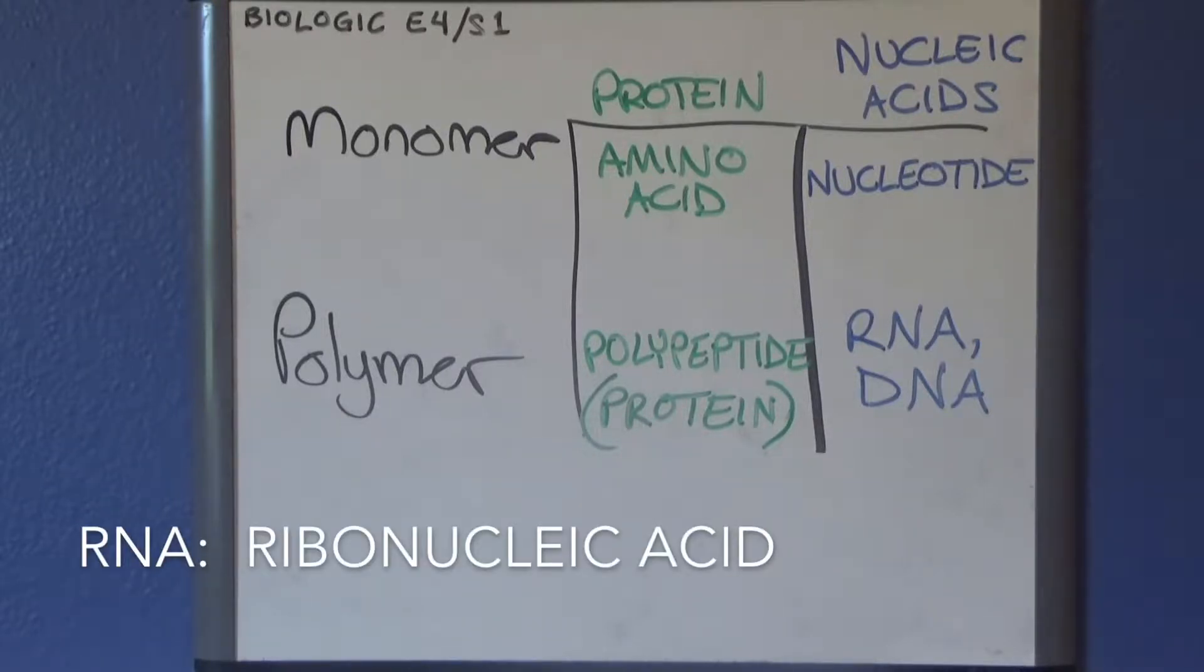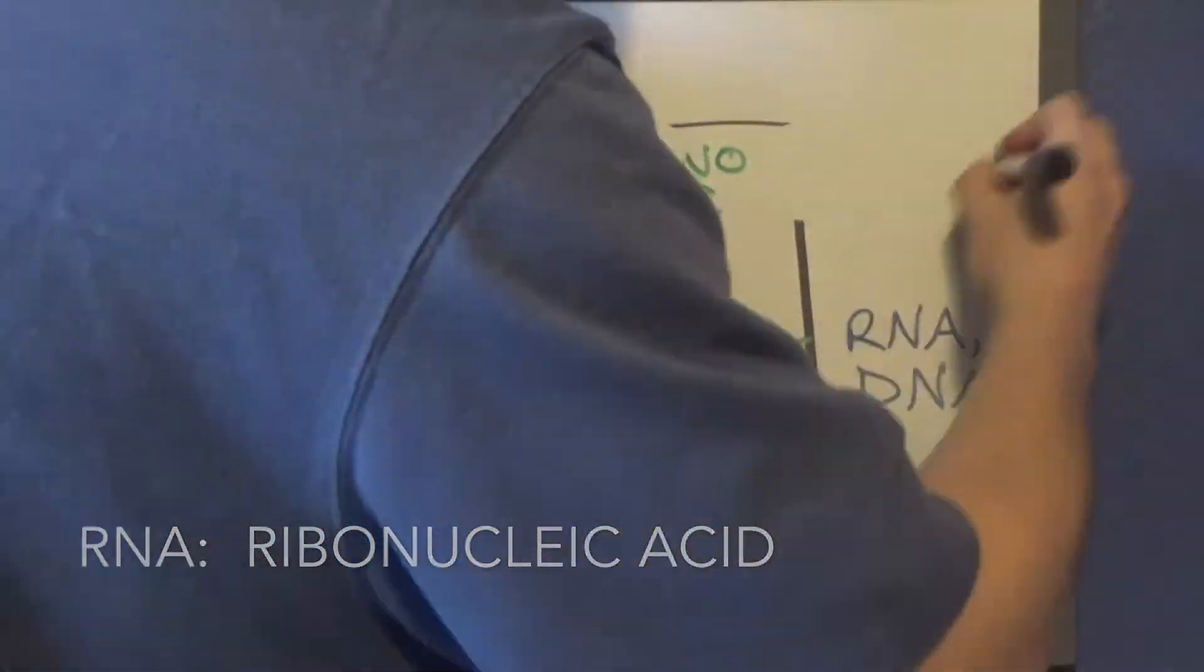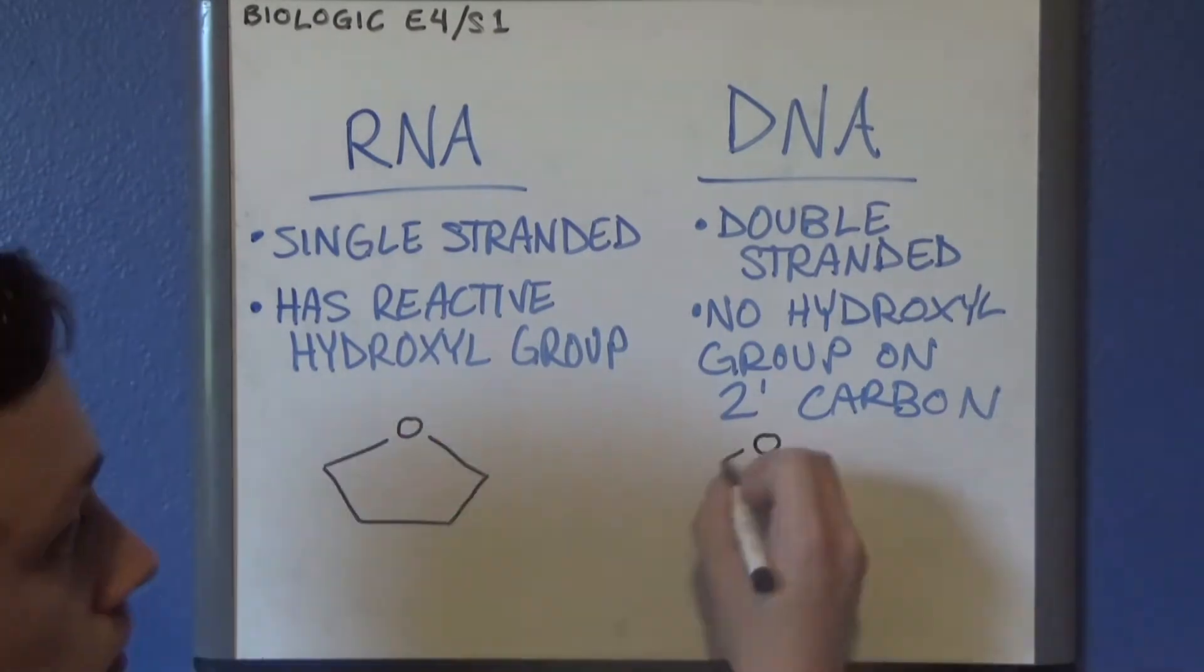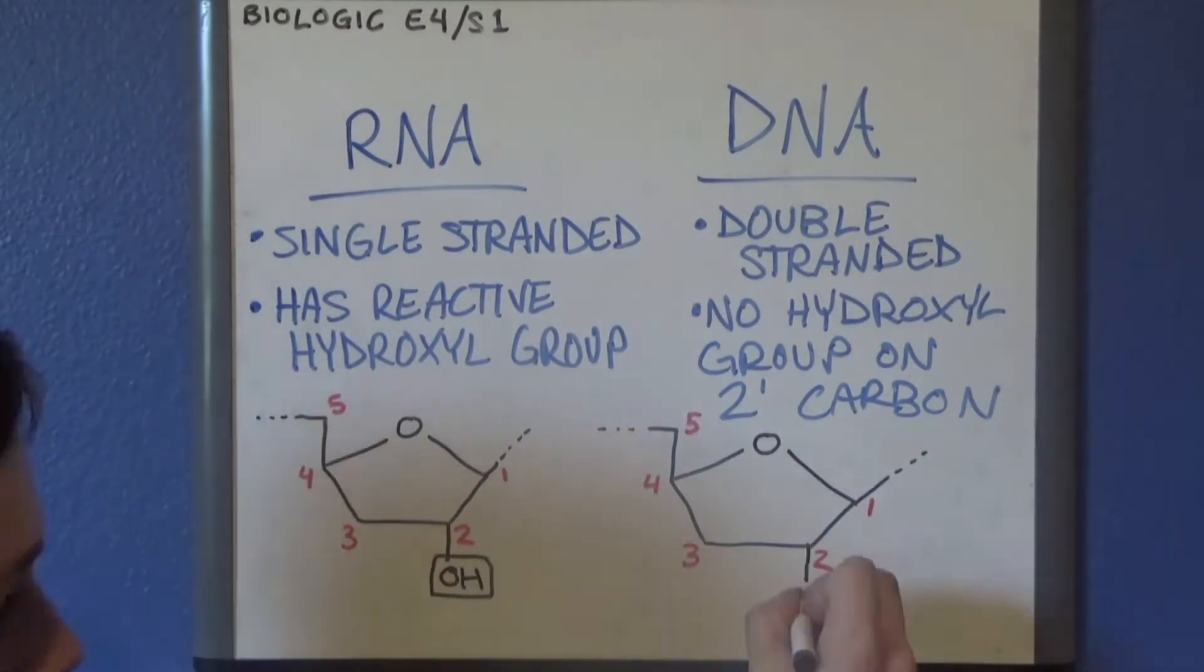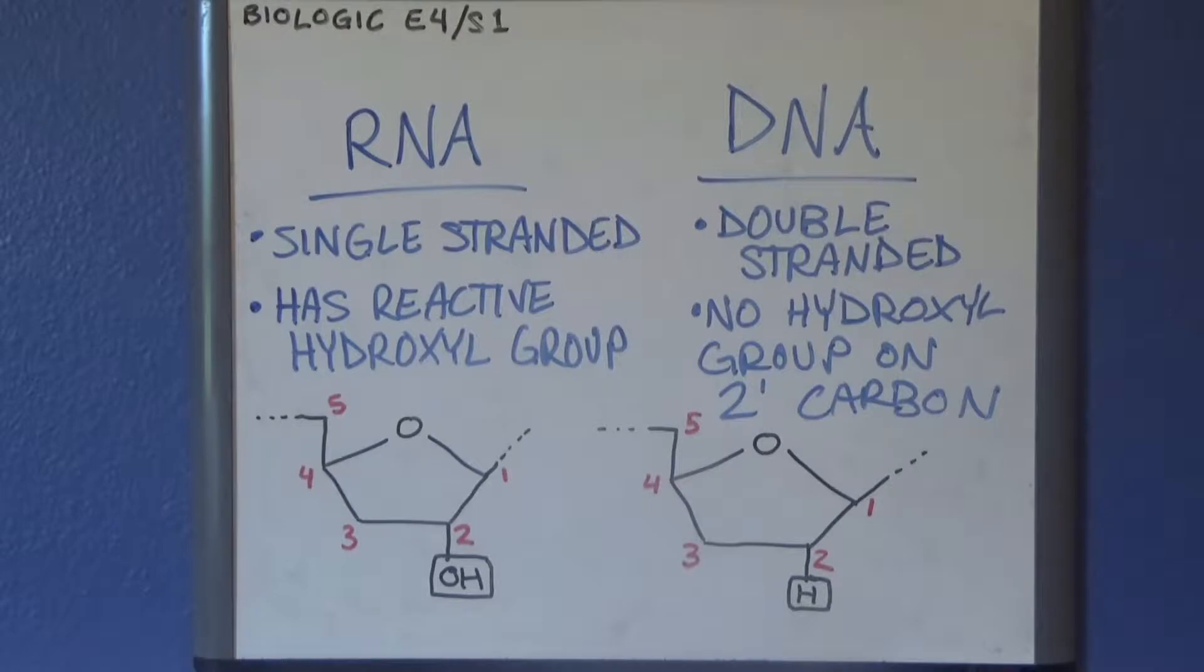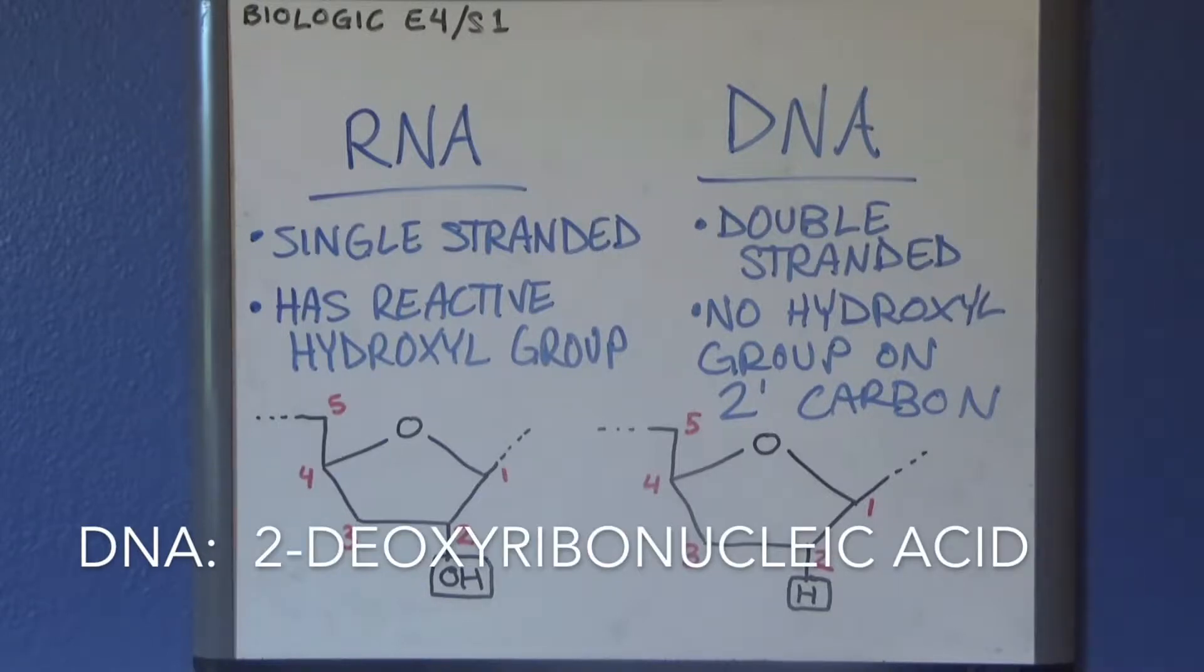Ribo, as you probably noticed, is the prefix in ribonucleic acid, or RNA. DNA has a similar structure to RNA, except that DNA has two complementary strands while RNA has one strand. More specifically, DNA lacks the hydroxyl group bonded to its two-prime carbon that RNA has. Because DNA lacks this oxygen atom, it carries the prefix 2-deoxyribo. DNA is thus the acronym for 2-deoxyribonucleic acid.